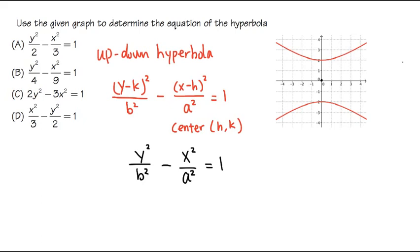Let's figure out the b value first, because b is underneath the y, so that's the up and down movement. From the center, as you can see, you go up 1, 2 — twice. So that means the b value will be 2, and we will have y squared over 2 squared on the bottom.